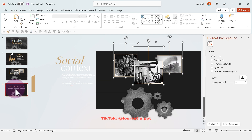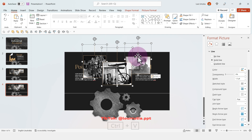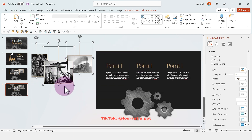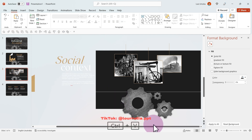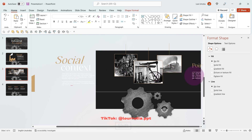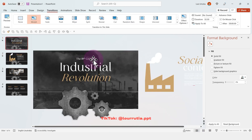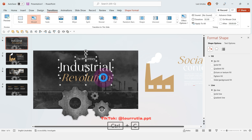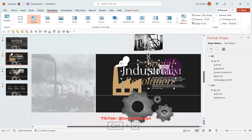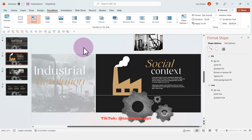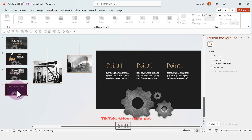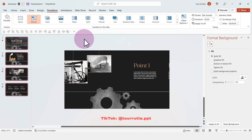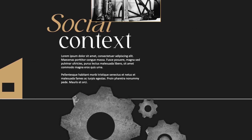Copy the images from the third slide and paste them into the fourth slide, dragging them to the left. Copy the points from the fourth slide and paste them into the third slide, dragging them to the right. Go back to the first slide, copy the title and paste it into the second slide, dragging it to the left. Finally, select all slides holding Shift, click on Transitions, and click Morph — that's how I did this animation in PowerPoint.